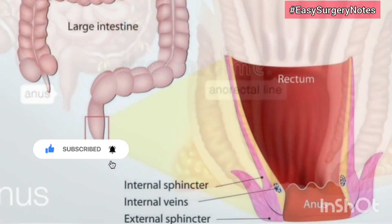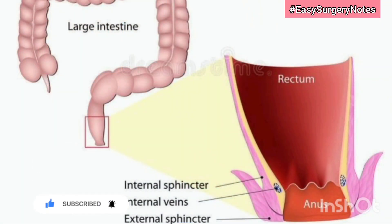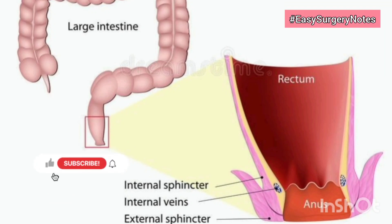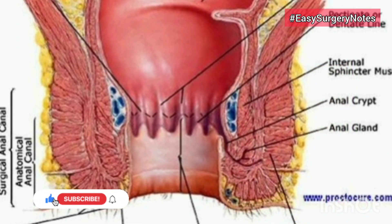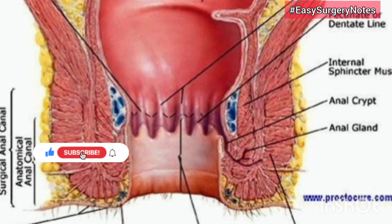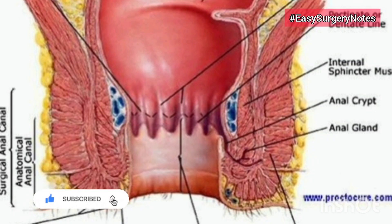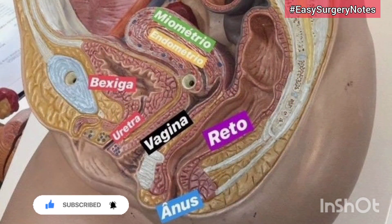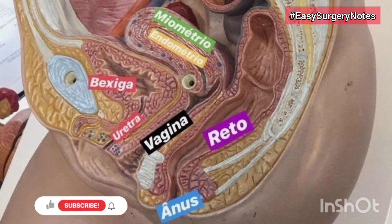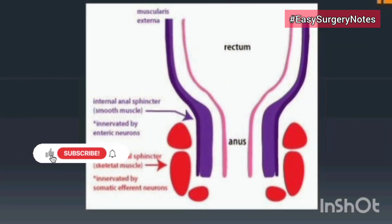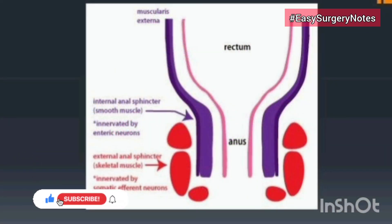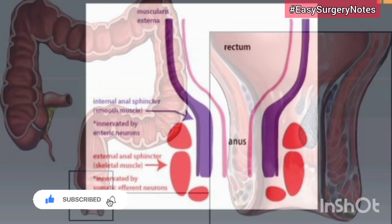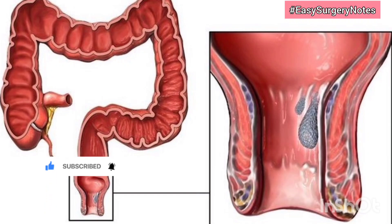Rectum: the rectum constitutes the terminal segment of the colon. It extends from the rectosigmoid junction to the dentate line below, and is 12 centimeters in length. The rectosigmoid junction lies opposite the sacral promontory. The rectum begins as a continuation of the sigmoid colon at the level of the S3 vertebra and ends by becoming continuous with the anal canal at the anorectal junction, which lies 2 to 3 centimeters in front of and a little below the tip of the coccyx.